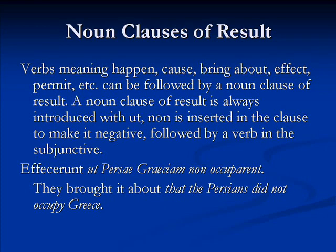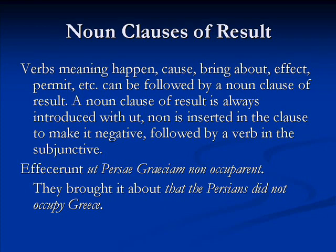Negative clauses of result are introduced with ut but will have a non inserted in them. Noun clauses of result are not signaled by a so-word, like ita, tam, sic, etc. The following verbs are commonly followed by a noun clause of result. Notice how they show to happen, to cause, bring about, effect, or permit.